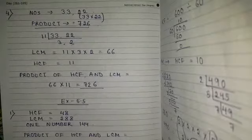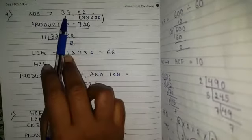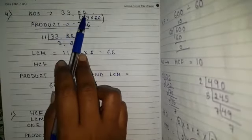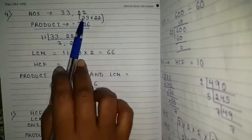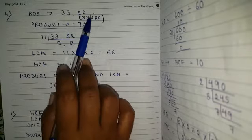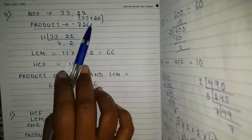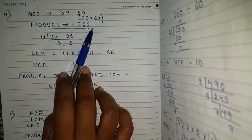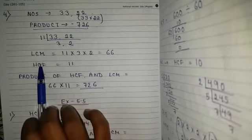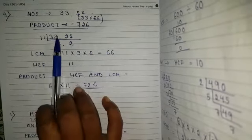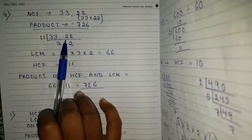Now question number 4. The numbers given are 33 and 22. Product means we multiply these two numbers: 33 into 22 equals 726. Now we will find LCM and HCF using the division method.